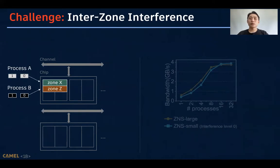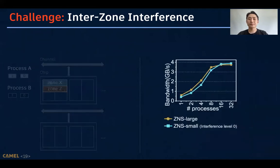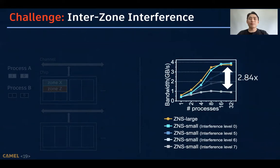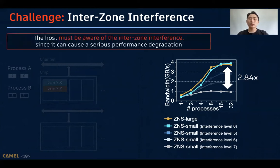However, we should note that the requests from different processes cannot be served in parallel if the corresponding zones exist on the same flash resource, and this phenomenon is called inter-zone interference. Based on our evaluation, the inter-zone interference can reduce the performance by about three times compared to the optimal case. Thus, the host must be aware of the inter-zone interference and prevent it, since it can cause a serious performance degradation.